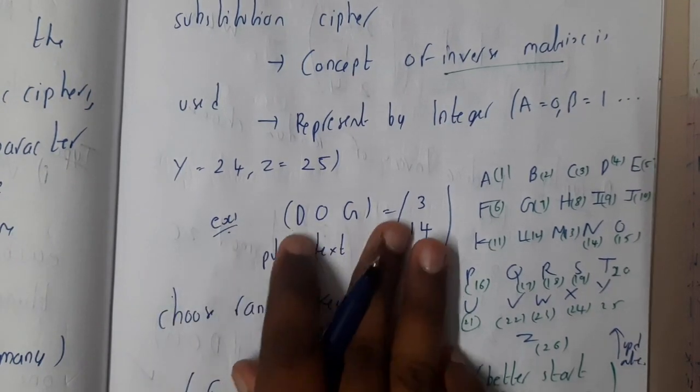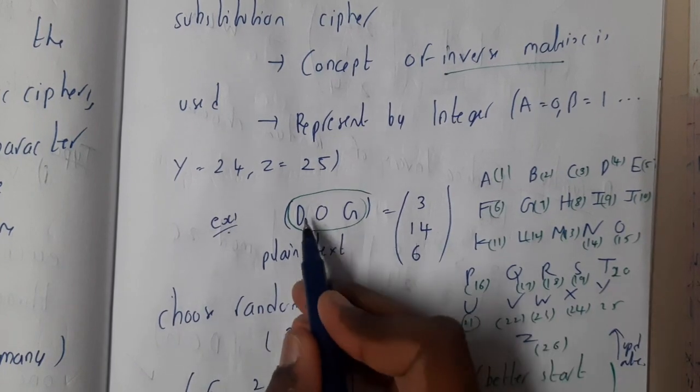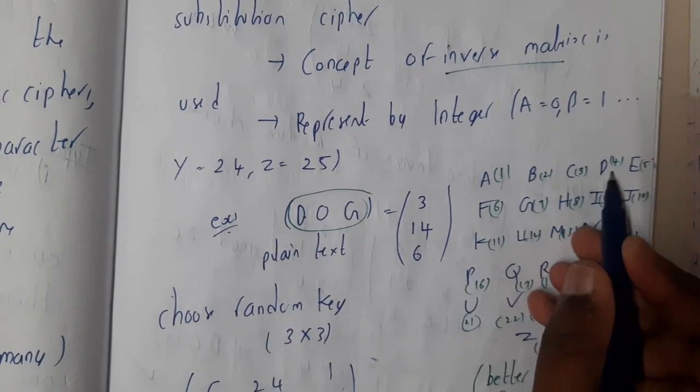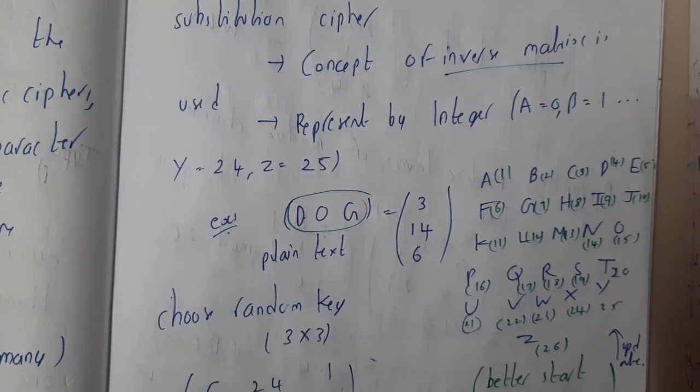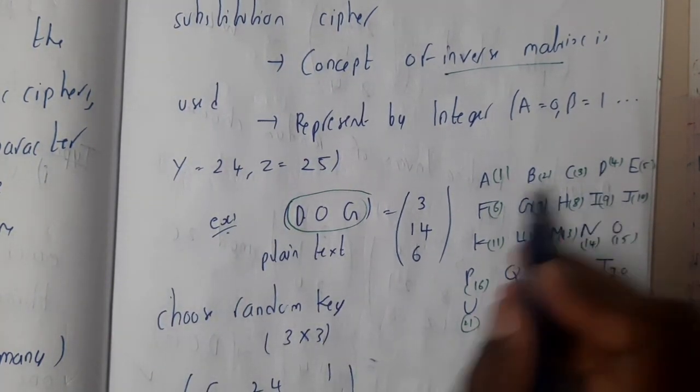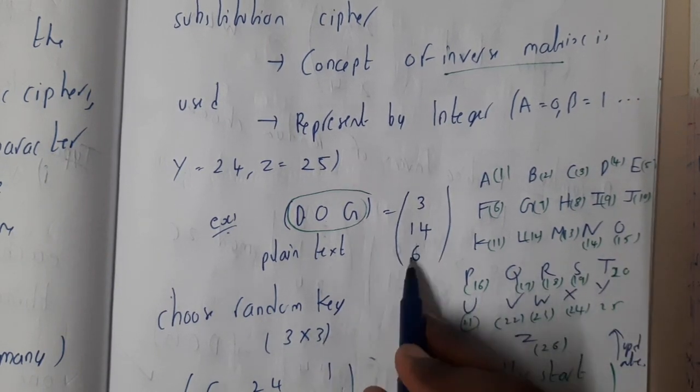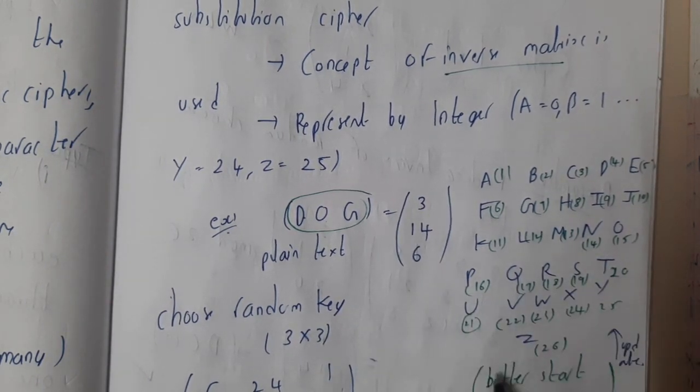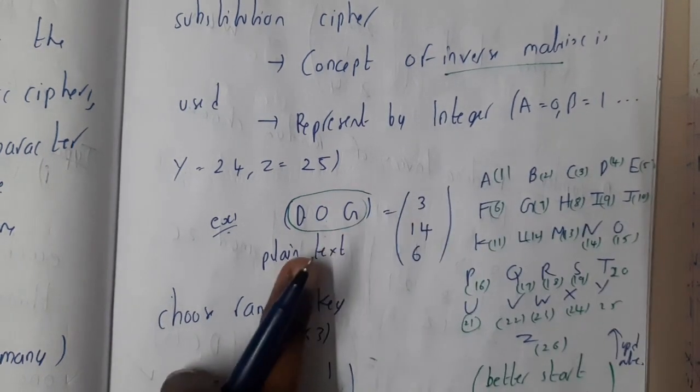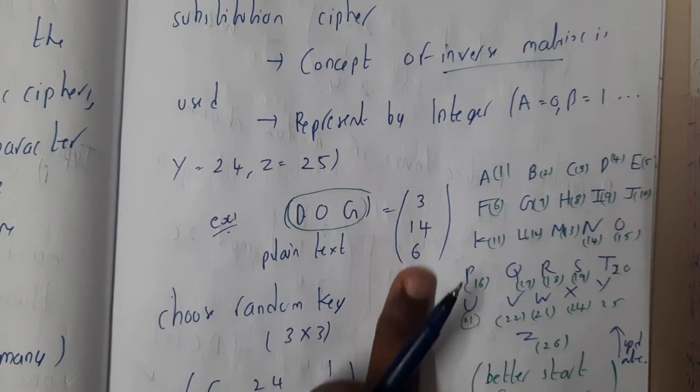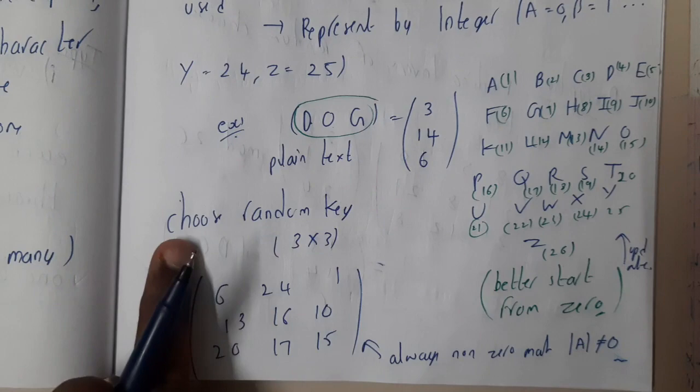If you get a text, assume that we are taking a simple letter, that is DOG. What is D value? Here always subtract minus one because I solved it with respect to zero. Four minus one is three. Similarly for O it is 15, 15 minus one is 14. For G it is seven, it will be six. So we converted our plain text into a numerical format based on our script.